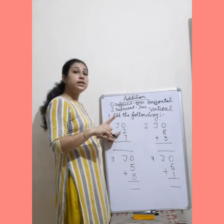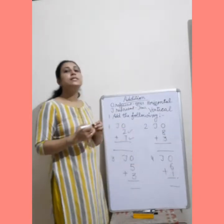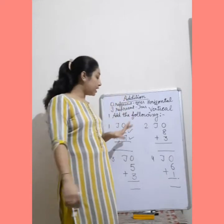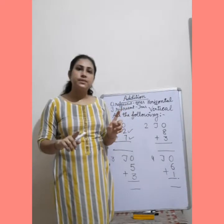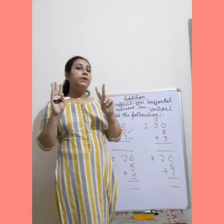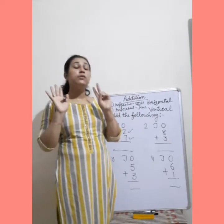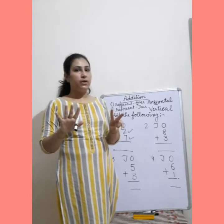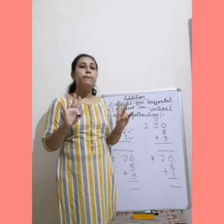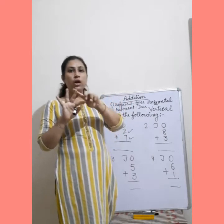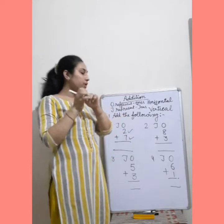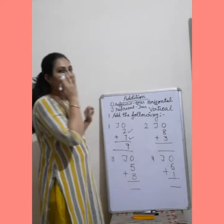First digit आपका क्या है? Two. And second digit क्या है? Seven. Two को keep in your mind. And seven — count on your finger. Seven finger up करनी है. We will count after two — 3, 4, 5, 6, 7, 8, then 9. Your answer is nine, and right here nine.